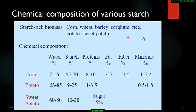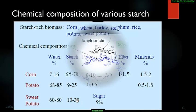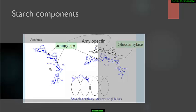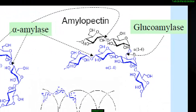Various starch sources can be used for ethanol production: corn, wheat, barley, sorghum, rice, potato, and sweet potato. Corn has the highest starch concentration with only 8 to 10 percent protein. Potato has relatively low starch (9 to 25%), and sweet potato has 10 to 30% starch. Starch consists of amylose and amylopectin. Glucoamylase specifically breaks the alpha-1,6 bonds in amylopectin's branching, while alpha-amylase acts on both amylose and amylopectin by breaking alpha-1,4 bonds.